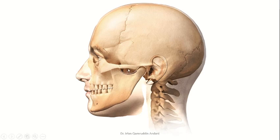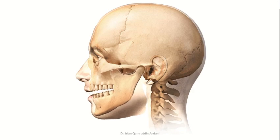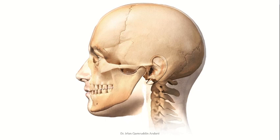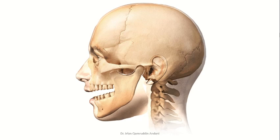This person has achieved maximum intercuspation — this is centric occlusion. When he opens his mouth up to 20 millimeters, his condyle will rotate; his jaw will rotate. There is no translation in centric relation. Normally there will be no discrepancy between centric occlusion and centric relation, meaning that keeping the condyle in centric relation position, the patient can achieve maximum intercuspation. The condyle is still in the most superior anterior position in the glenoid fossa.